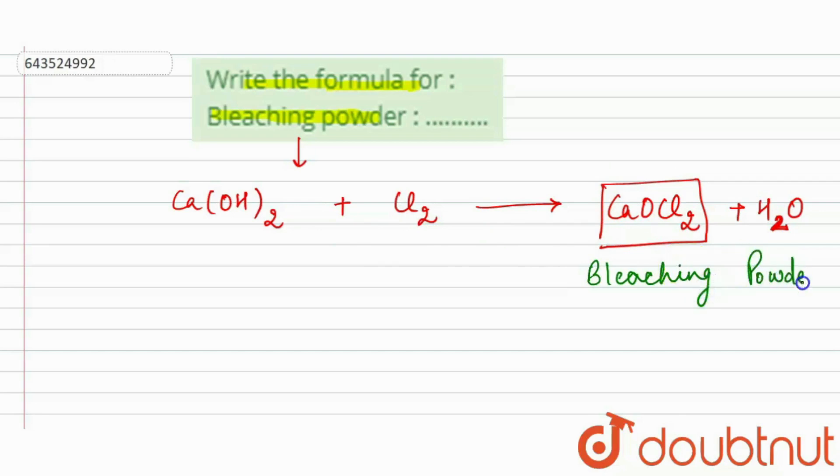This is also known as calcium oxychloride. So we can say that the chemical name for bleaching powder is calcium oxychloride, and CaOCl2 is the formula for bleaching powder.